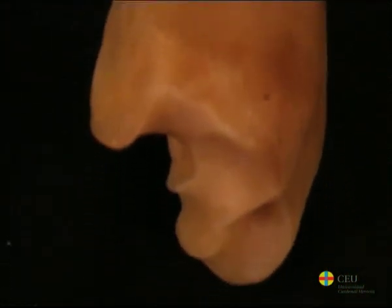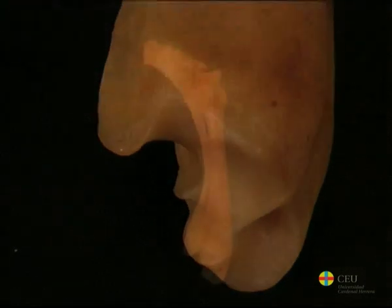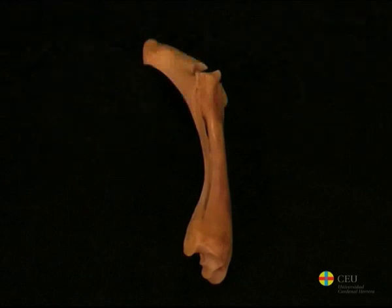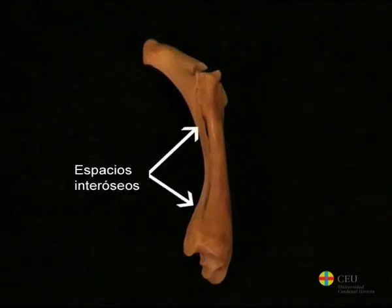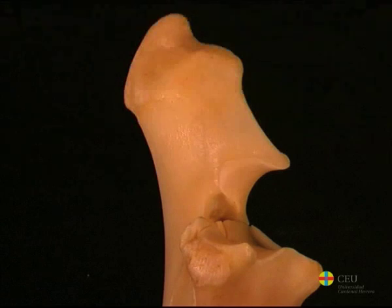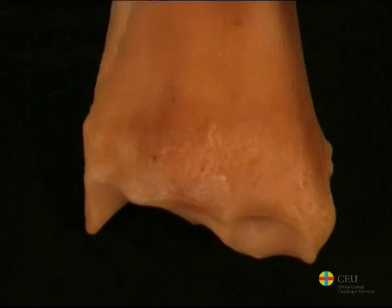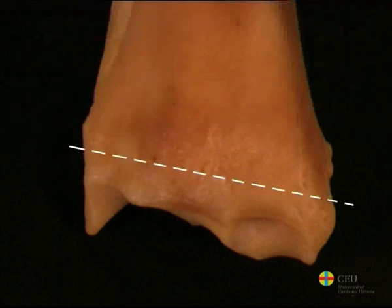The ulna in ruminants has a greater presence than in equines, so that it can be followed up to its distal extremity. Its body fuses with the radius along all its length, except in two interosseous spaces. The olecranon is well developed and has a transversal notch. The body of the radius is rectilinear, widened in the extremities, and, dissimilar to equines, the distal extremity forms an oblique angle with the longitudinal axis of the bone.